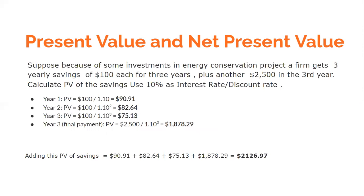Now let us understand present value and net present value with the help of an energy conservation project. Let us say you go and do an energy audit, and this audit would generate savings over a period of 3 years. Because of some investment in an energy conservation project, the savings would be 100 dollars after year one, another 100 dollars after year two, and then 100 dollars plus 2,500 dollars in the third year — so in the third year you are actually receiving 2,600 dollars.